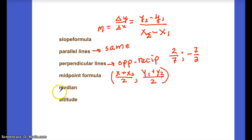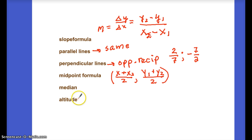A median is a segment that goes to the midpoint of an opposite side, and an altitude is perpendicular to the opposite side. Both apply to triangles.